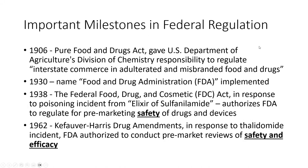Let's talk about how federal regulation has emerged in healthcare over the last century. In 1906, during the Industrial Revolution, we were seeing industrialization of the food supply. Earlier you would have only eaten food produced near you, but as refrigerated rail cars became common, we could move meat long distances. It used to be that if you wanted a steak, you'd buy it from your local butcher, because there was no way to safely transport butchered meat over long distances.